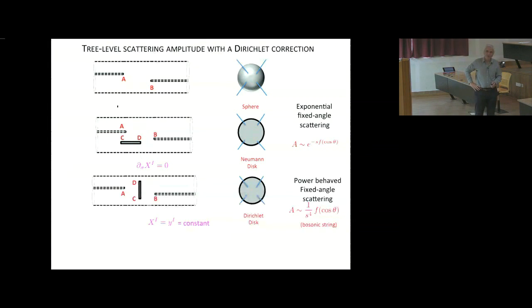However, if you insert, instead of a conventional disk, you insert one of these Dirichlet boundaries, then everything changes. There's now a pinch when you integrate over A and B, so that although they never get close to each other on the world sheet, they get close to the boundary, and the boundary is mapped into a single point in the target space. So they're getting close to each other in the target space. So this diagram has fixed-angle scattering, which in the case of the bosonic string has some power behavior like this. It's a function of the scattering angle with a power dependence on the energy. That's the key observation, and it's a very simple observation, and it's a very simple calculation.